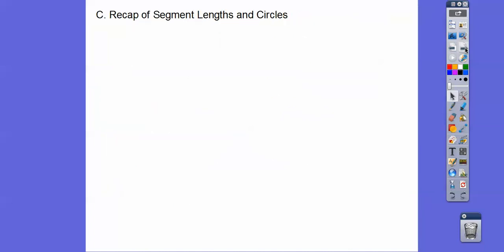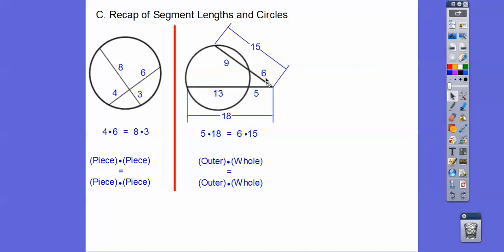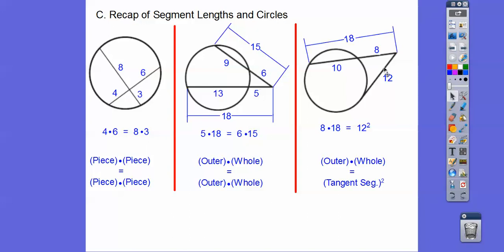Just to recap you guys, so if we have intersecting chords, then it goes piece times piece equals piece times piece, 4 times 6 equals 3 times 8. If we have secant segments, then we do outer times the whole, outer times the whole. I put the actual lengths in there, so 5 times 18 does equal 6 times 15, which is both of them are 90. And then here it's outer times whole equals the tangent segment squared. 8 times 18 is 144, so is 12 squared.